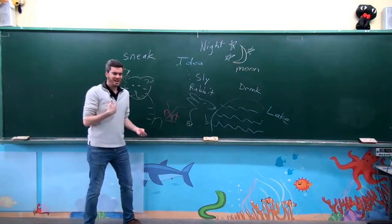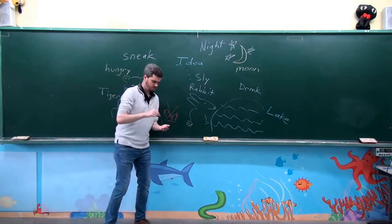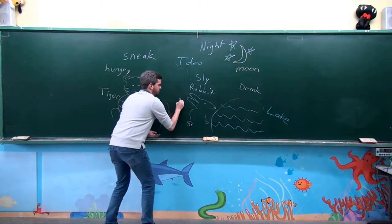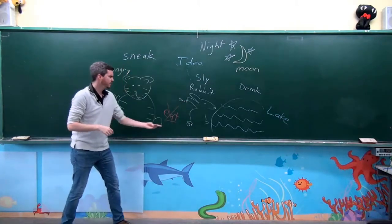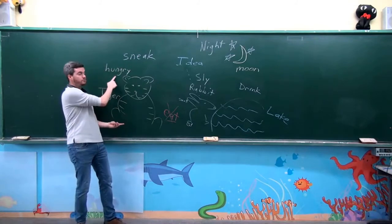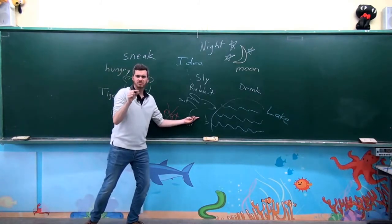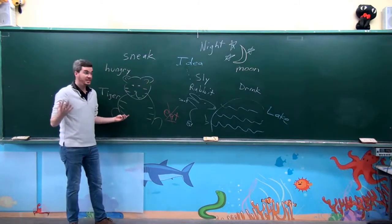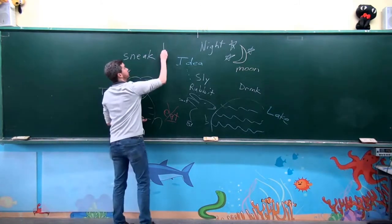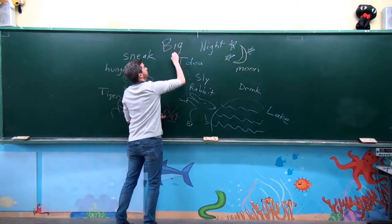The rabbit says, I am very small. I am small. You are hungry. You are very hungry. I am small. The rabbit says to the tiger, you should eat something big. Eat something big.